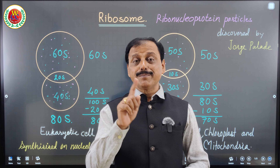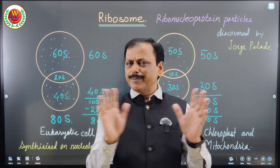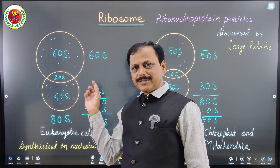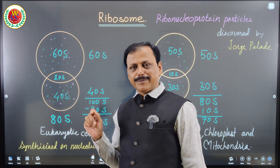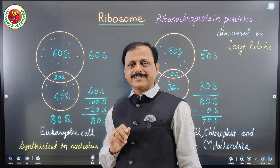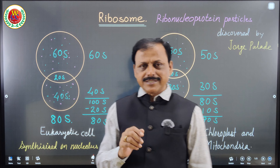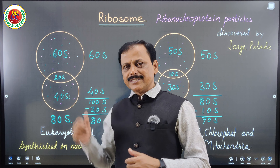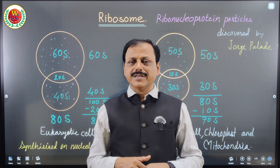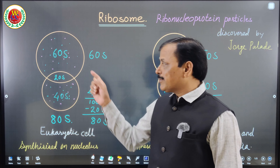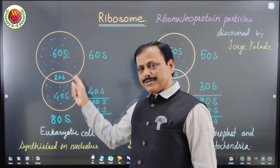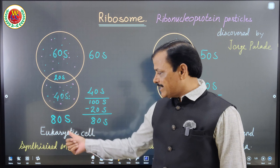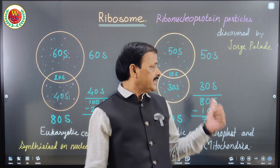Ribosomes are non-membrane bound organelles — they don't have a membrane. Although in my drawing it may seem to look like a membrane, it is not. They are granular structures made up of two subunits. You can see very easily here the larger subunit and smaller subunit in 80S type, and in 70S type also a larger subunit and smaller subunit.